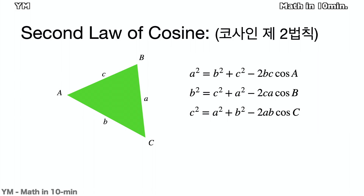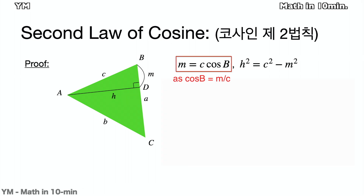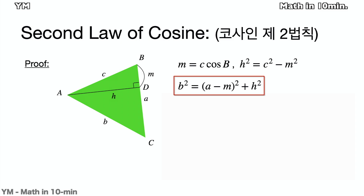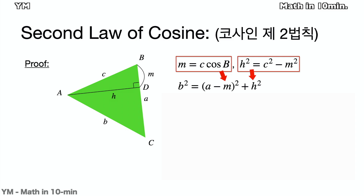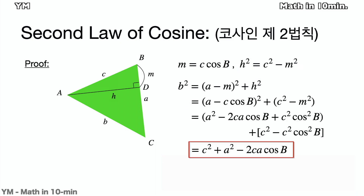The way of proof might be slightly different where the angle is acute or obtuse. I will show how to prove where an angle is acute. I will draw a line passing A and perpendicular to line BC. Let the length of line BD be M and the length of line AD be H. We can find that M equals C times cosine B, and H squared equals C squared minus M squared. Then B squared equals (A minus M) squared plus H squared. Using these expressions for M and H squared, the equation simplifies, and by simplifying it we get C squared plus A squared minus 2CA cosine B.